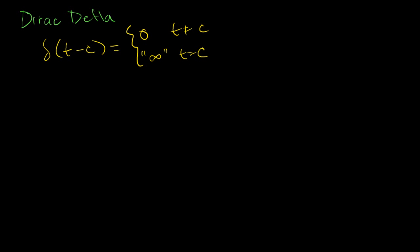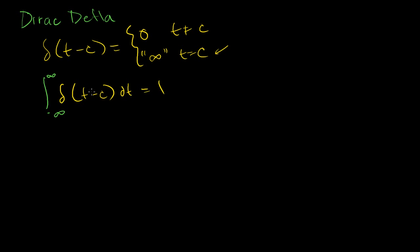More important than this — and this is kind of a pseudo-definition — is the idea that when we take the integral, when we take the area under the curve over the entire t-axis, and obviously it equals 0 everywhere except at t is equal to c, when we take this area, this is the important point: the area is equal to 1. And so this is what I meant by kind of pseudo-infinity.